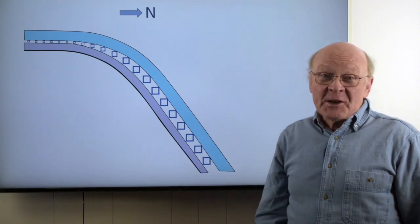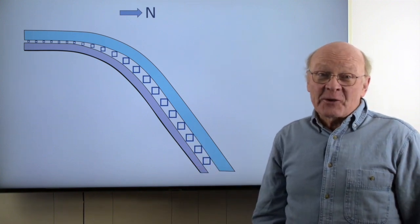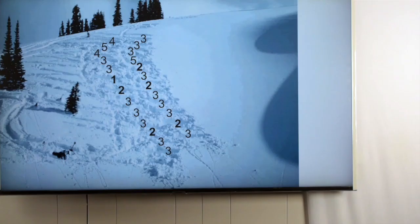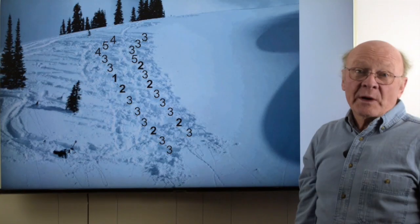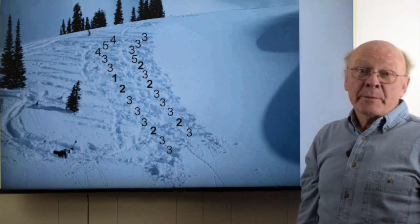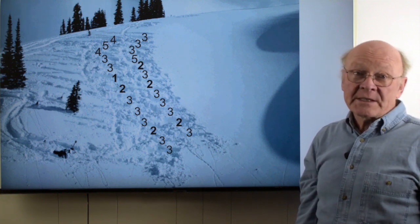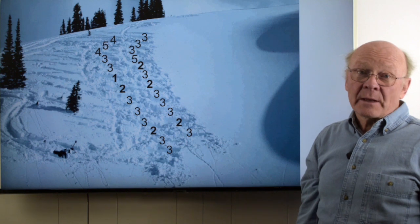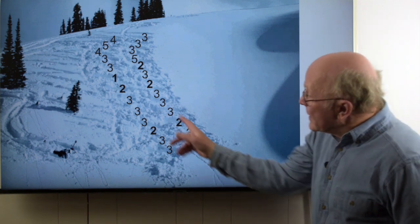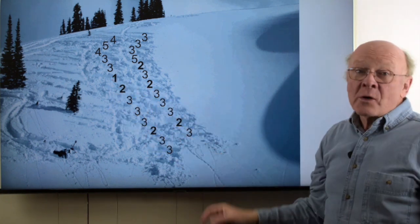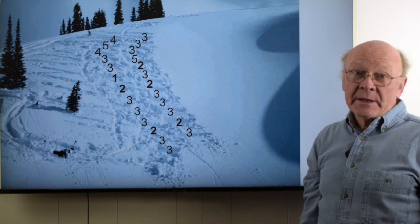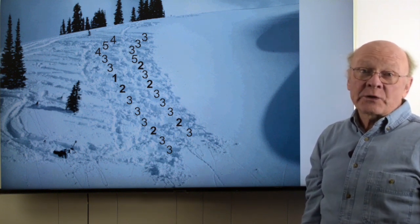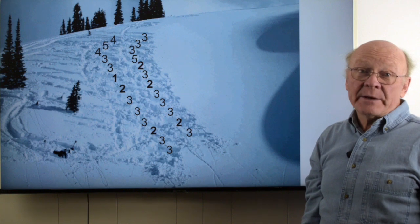Maybe I exaggerated the size of the faceted crystals, but you get the idea. Here's an example on a convex northwest-facing slope. The numbers are scores from rime block tests, which is a test for unstable slabs. The scores of 1, 2 and 3 lower on the slope indicate instability. These rime blocks released on a buried layer of surface hoar down 50 to 60 centimeters.